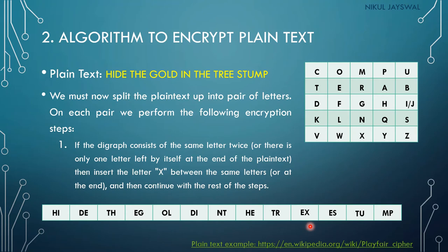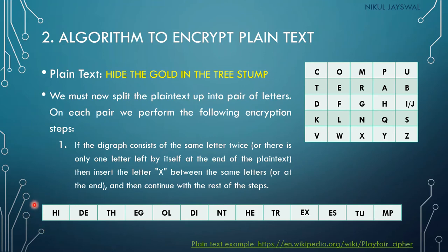We now encrypt one block (pair of characters) at a time. In Caesar cipher we encrypt one character at a time, but in Playfair cipher we encrypt two characters simultaneously as a pair.